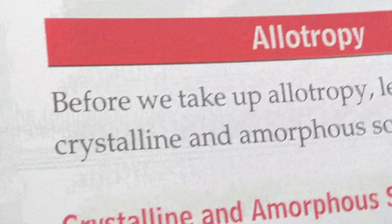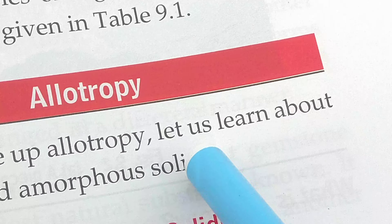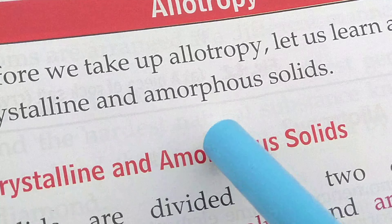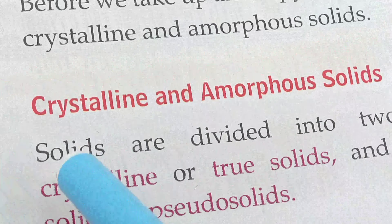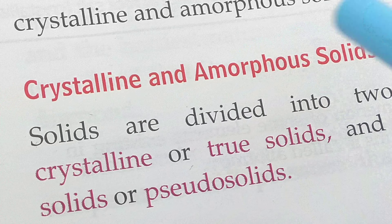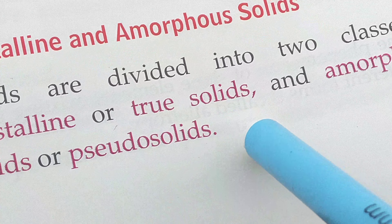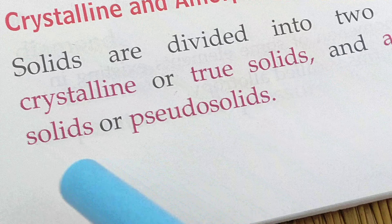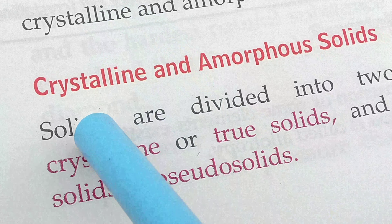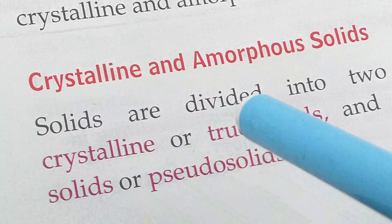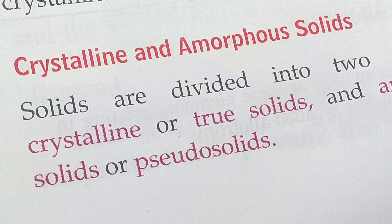Next, allotropy. Before we take up allotropy, let us learn about crystalline and amorphous solids. Solids are divided into two classes: crystalline or true solids, and amorphous or pseudo solids. Crystalline means a true solid, and amorphous means a pseudo solid — pseudo means false.